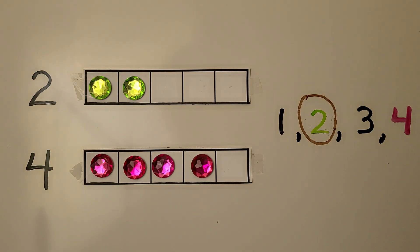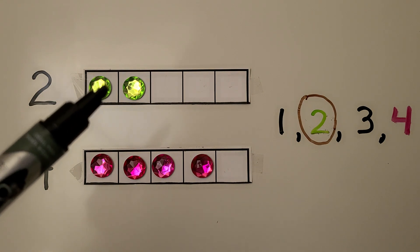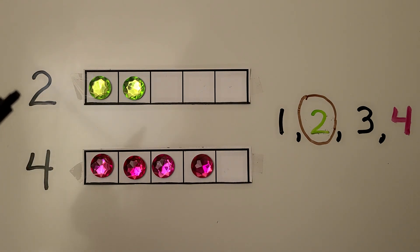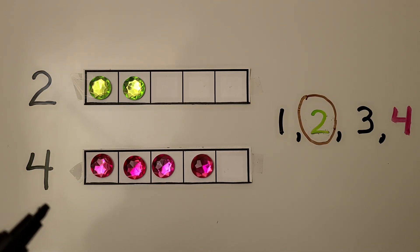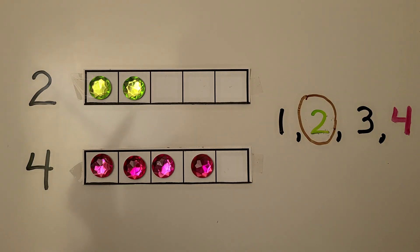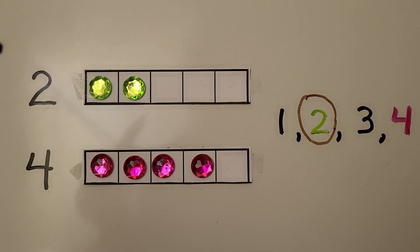Here we have some five frames. This five frame has one, two counters in it. This five frame has one, two, three, four counters in it. We can compare sets when the number of objects in one set is less than the number of objects in the other set. And less means not as many.